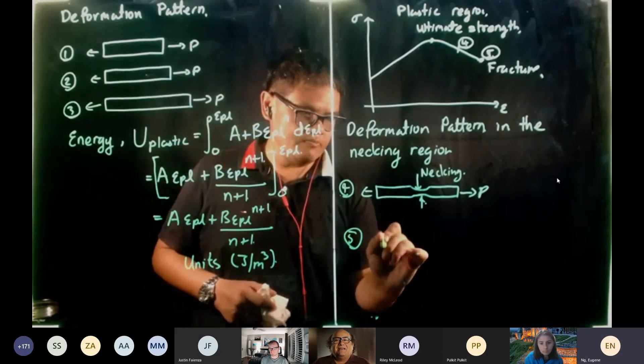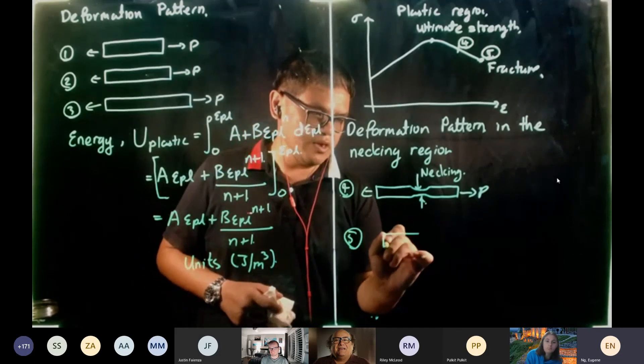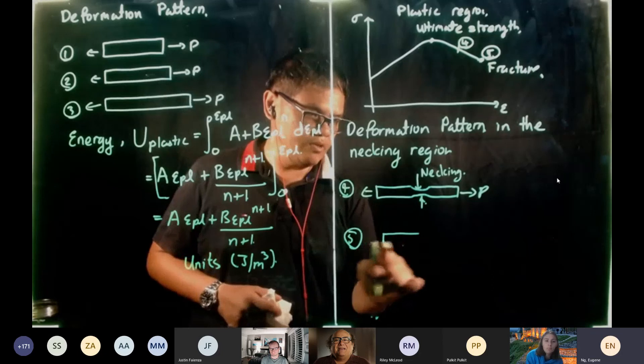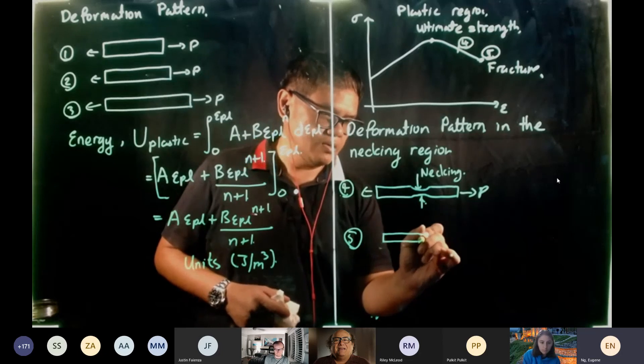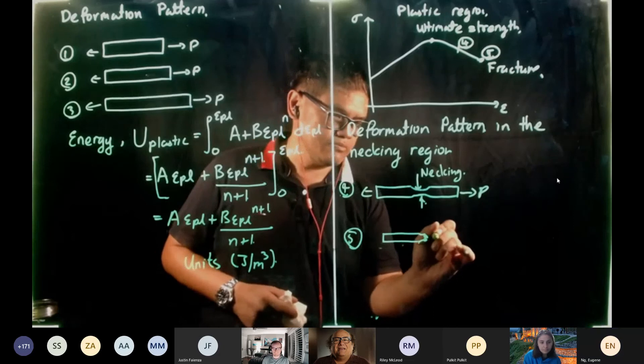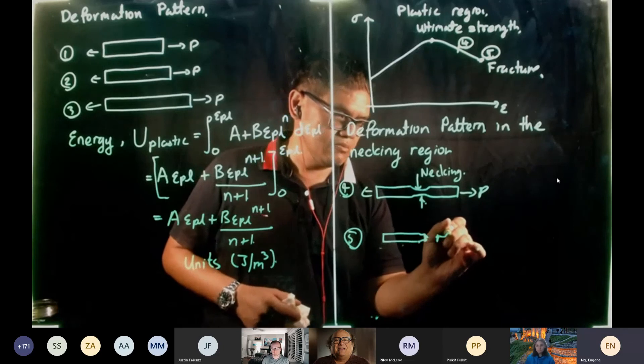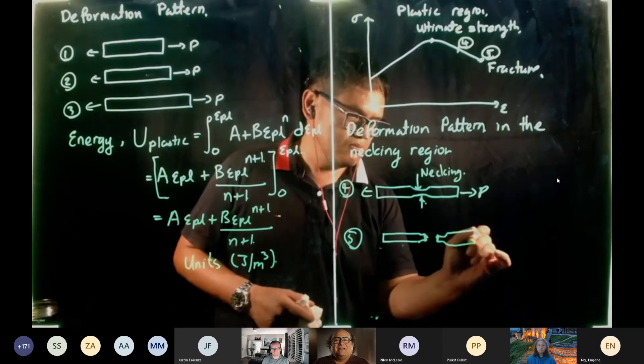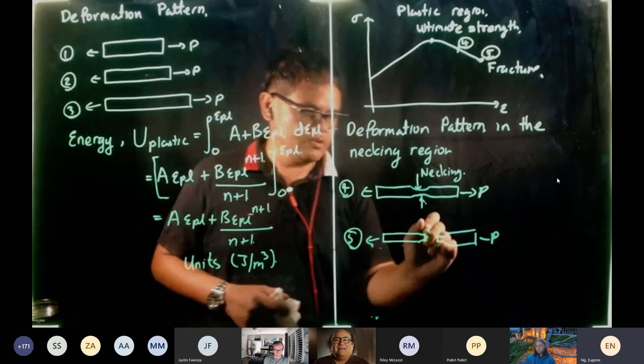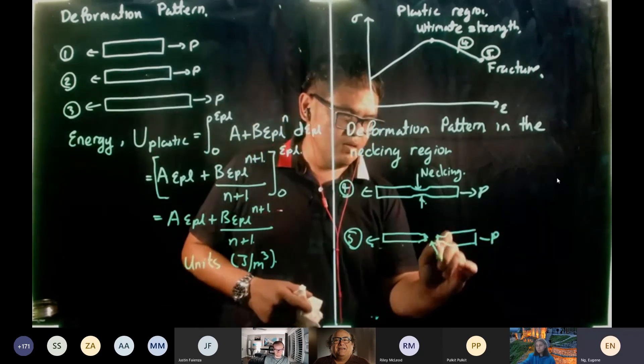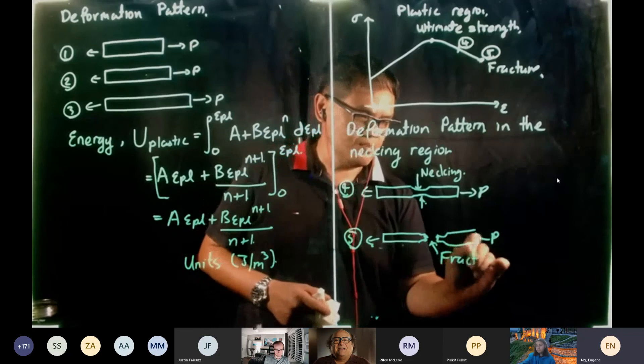And finally, we reach 5, which is known as fracture. So what you see in tensile of a ductile material, you observe this type of failure. So this is where we call it fracture.